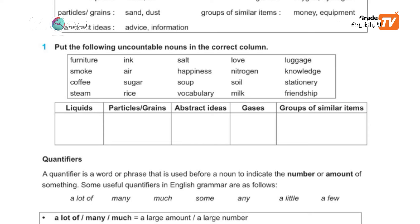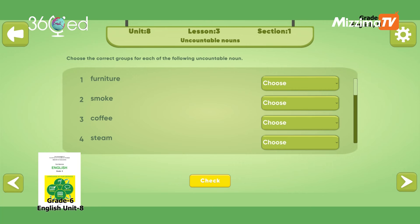You can use words like smoke, coffee, steam, ink, air, sugar, and rice. Choose the correct groups for each of the following uncountable nouns: liquids, particles or grains, abstract ideas, gases, and groups of similar items.